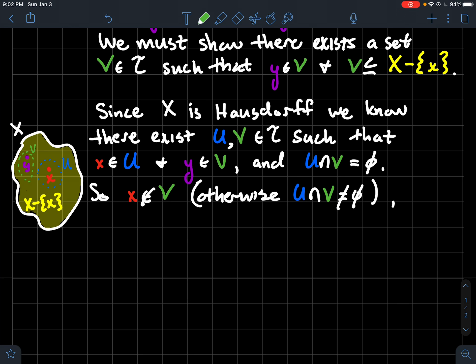Now what else do you notice here? Well x is not an element of V, otherwise the intersection of U with V would have to be non-empty since x would be in both of them, but that violates this condition that I've guaranteed from the Hausdorff property. So x is definitely not contained in V.